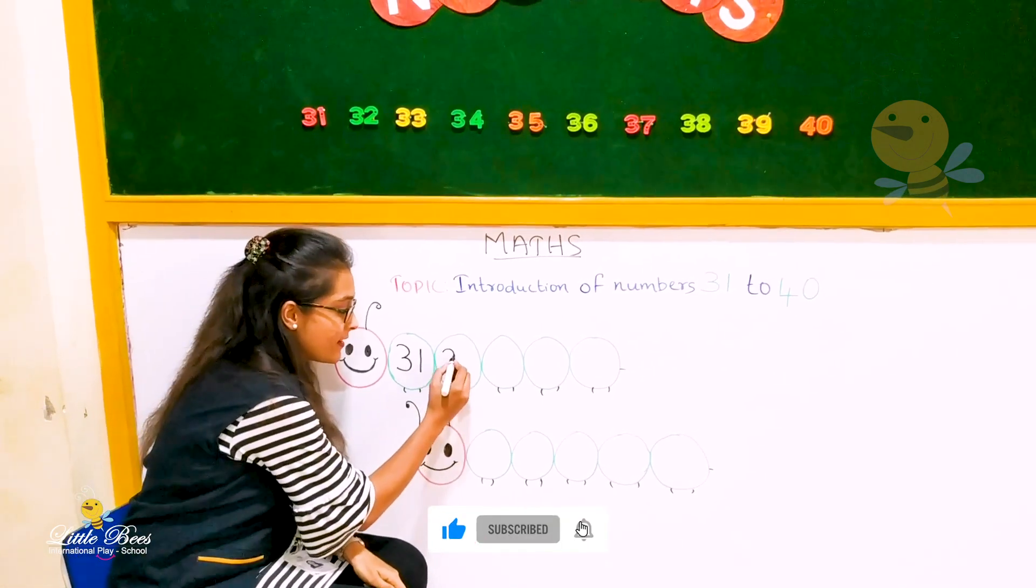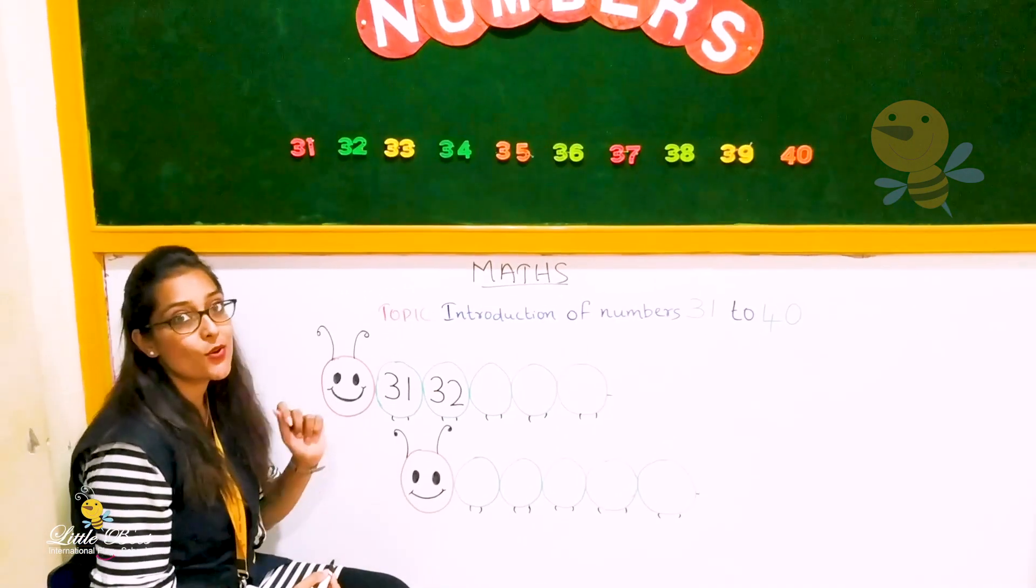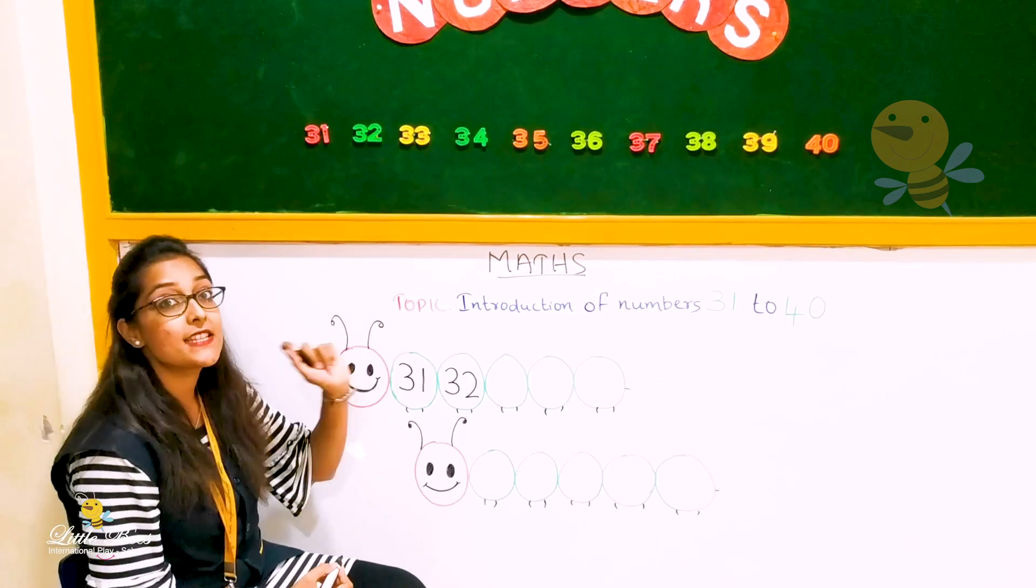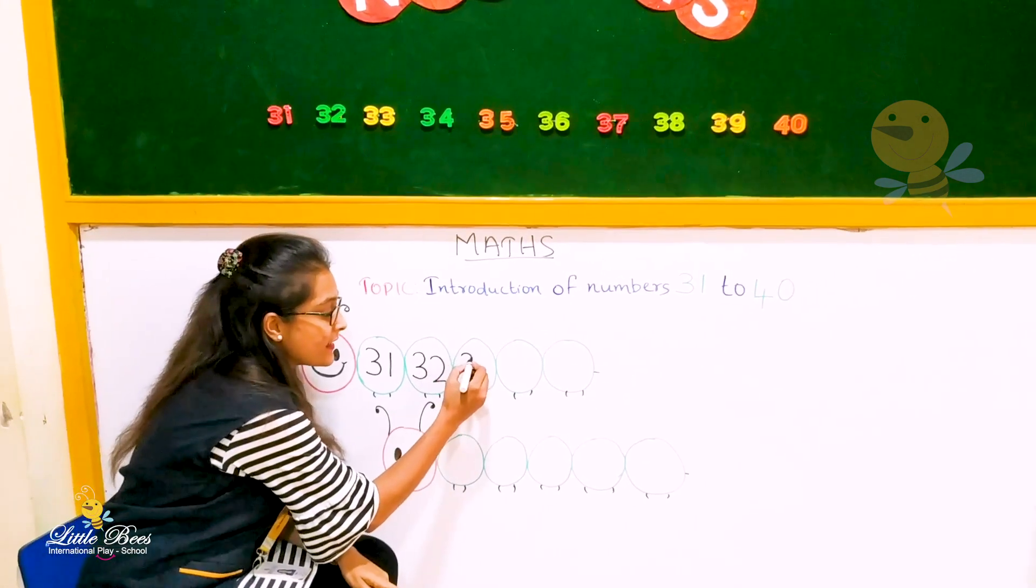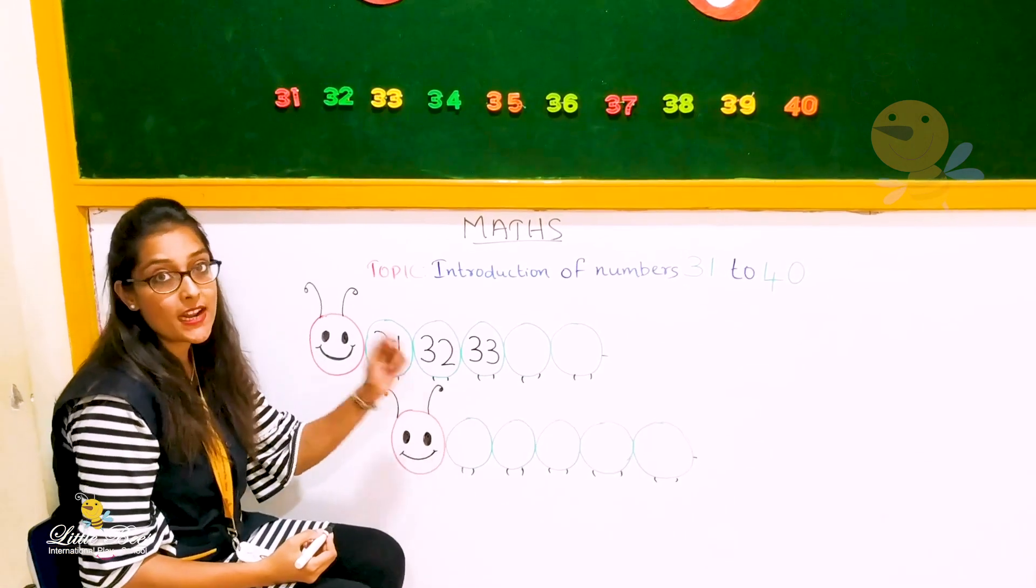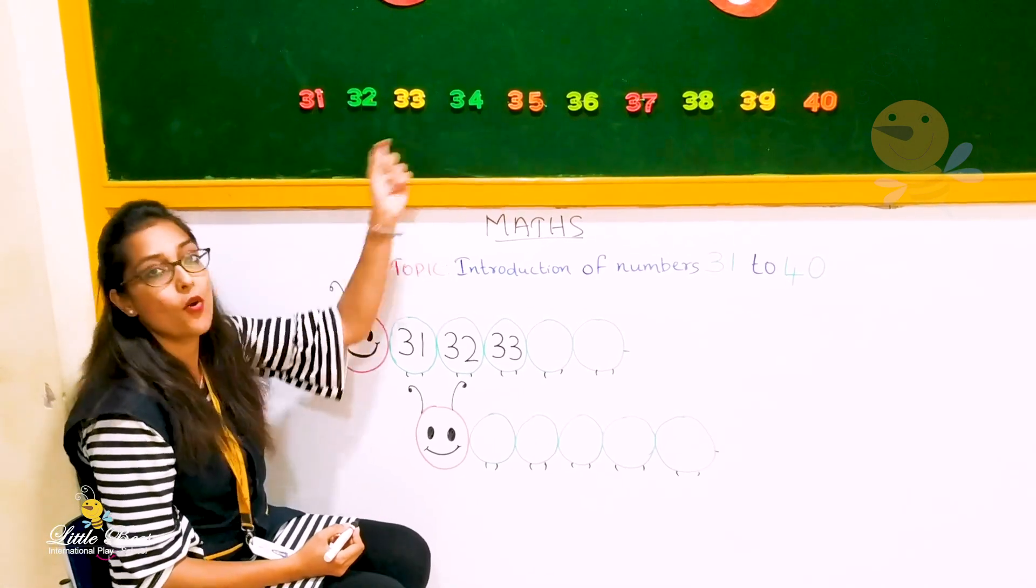What is the next number? 3, 2, 32. 3, 3, 33. How do we write it? 3, 3, 33. Next number is 3, 4, 34.